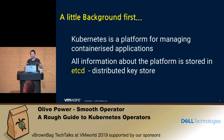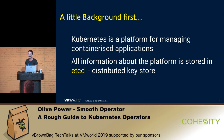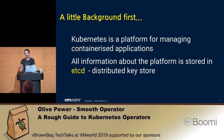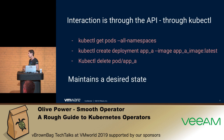First, we're just going to do a little background to set the context. As you probably all know, Kubernetes is a platform for managing containerized applications. All the information about the platform is stored in a distributed keystore called etcd — it's the memory of the cluster, if you like. And the interaction with Kubernetes is all API driven.